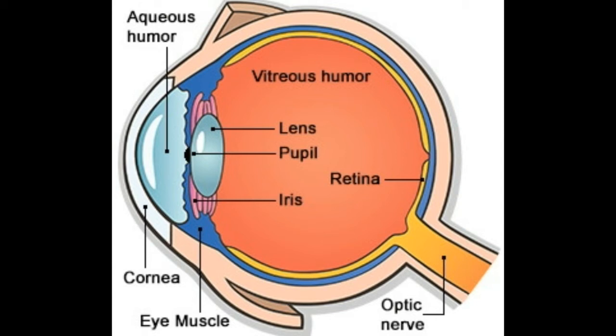Lens — the lens of the eye is situated directly behind the pupil. It helps in focusing the light on the retina. The lens is capable of changing its shape so as to enable us to see objects near and far. Ciliary muscles — this is a ring-shaped tissue that holds and controls the movement of the lens and therefore helps in controlling the shape of the lens.